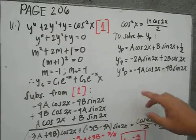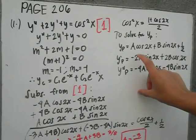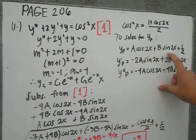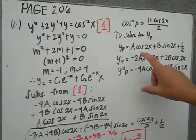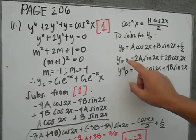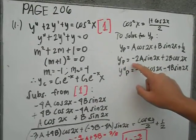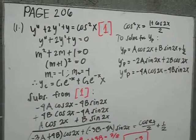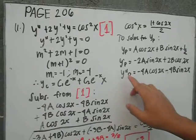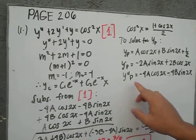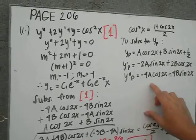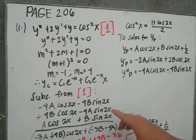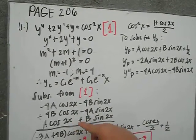To solve for yp, we set yp equal to a cosine 2x plus b sine 2x plus one half. So yp prime is equal to negative 2a sine 2x plus 2b cosine 2x. And yp double prime is equal to negative 4a cosine 2x minus 4b sine 2x.